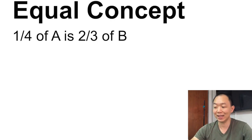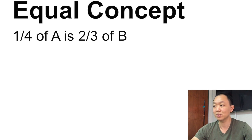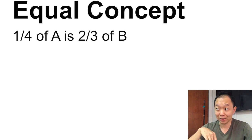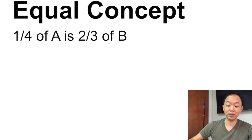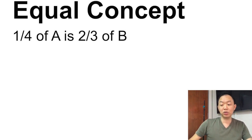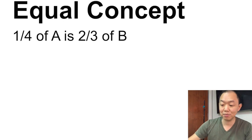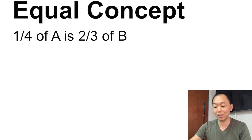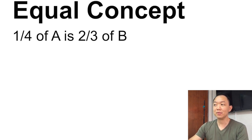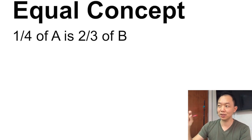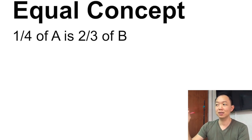Next heuristic is called the equal concept. There are two types of equal concept: one where the numerator is the same, and the other where the denominator is the same. You need to figure out which heuristic to use. In this particular example, they say that 1 quarter of A is equal to 2 thirds of B. So 1 out of 4 of A — what is the focus in this particular question? Is it the 4 or the 1?